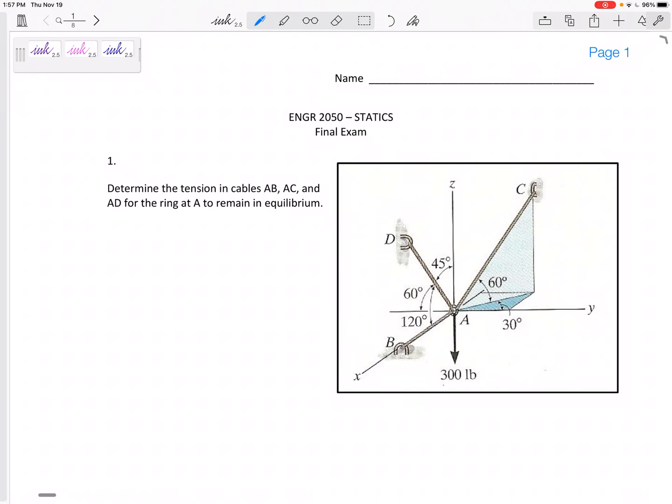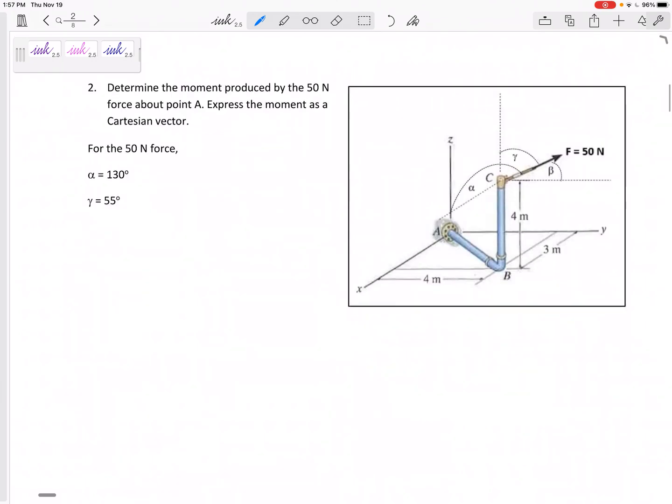Don't memorize these problems. I'm going to try my best to throw something at you that you haven't seen before. If you memorize anything, memorize the process. Think about the process of what am I going to do for problem number two. No matter what you see, if you know it's a moment about a point or moment about an axis, what am I going to do? First thing I would ask myself is this a moment about a point or moment about an axis, then write the equation for that, then try to break that equation up. Know the process for how to handle each of these problems and then hopefully you'll do pretty good.